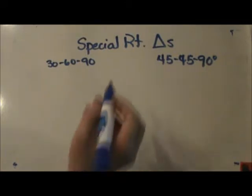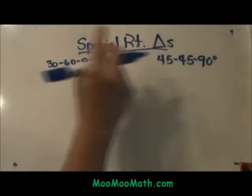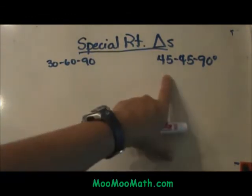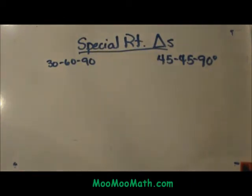Hi and welcome to Moo Moo Math. Today we are going to look at two types of special right triangles. The first type is your 30-60-90 triangle and the other is your 45-45-90 triangle.